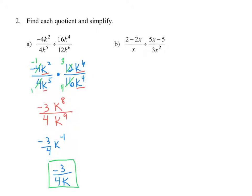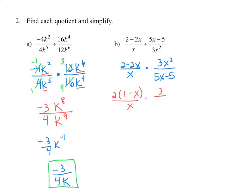Let's continue with example b. Begin by changing this division problem to a multiplication problem. So we have 2 minus 2x over x, change division to multiplication, and then we get 3x squared in the numerator over 5x minus 5. Now we can factor. If we take out a common factor of 2, we get 2 times the quantity 1 minus x over x times 3, and taking out a common factor of 5 in the denominator gives 5 times the quantity x minus 1.